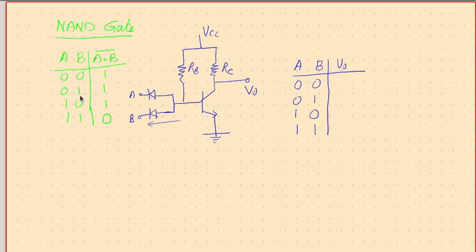Let us consider this truth table as applied here. When A is low, current can flow through this diode. When B is low, current can flow through this diode. So if A is low, current will flow through diode A downward; and if B is low, current will flow through diode B downward. If any one of them is low, there will be current flowing outwards, making no current available to flow in this direction, therefore the transistor gets off.